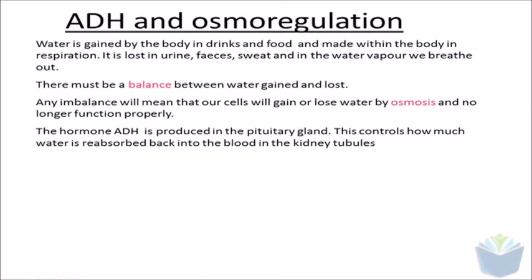The hormone ADH is produced in the pituitary gland, which is located just below the hypothalamus, and this controls how much water is reabsorbed back into the blood within the kidney nephrons.